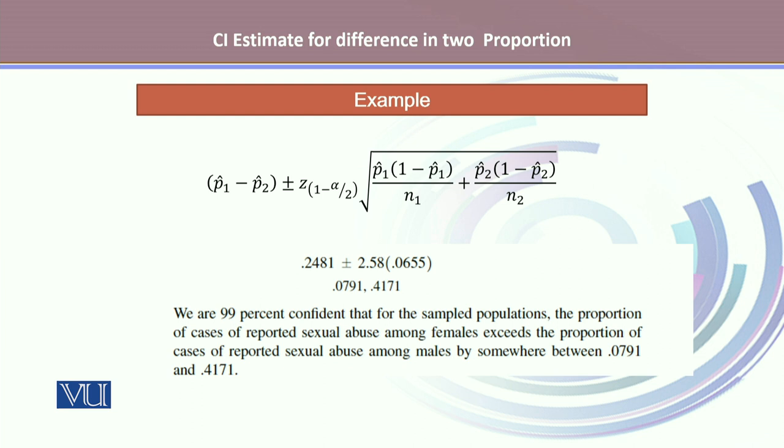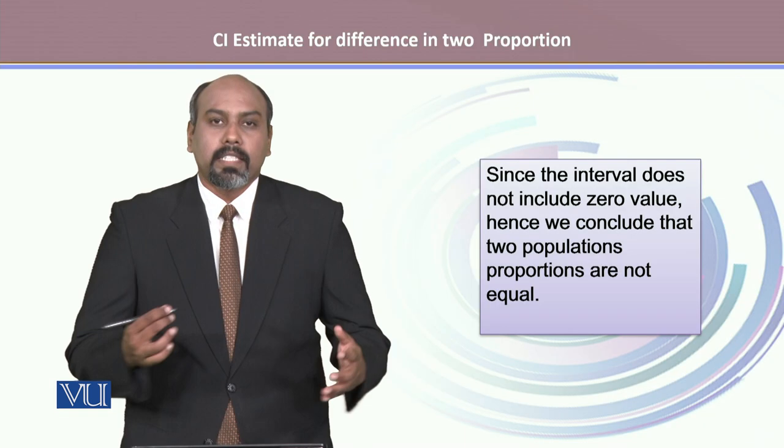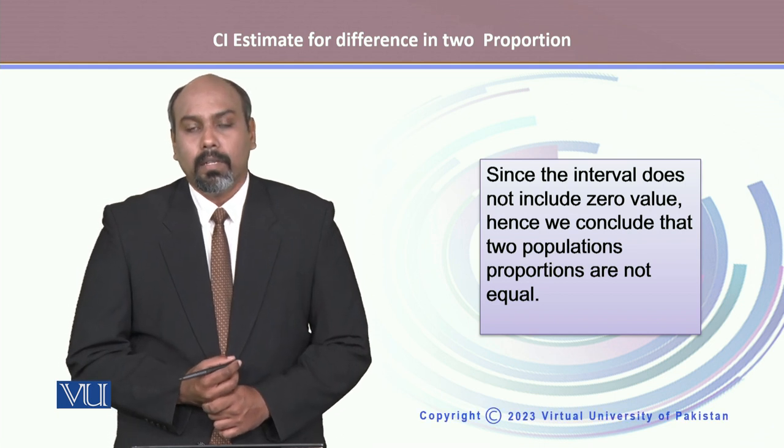Interpreting it as that we are 99% confident that for the sample population, the proportion of the cases of reported sexual abuse among females exceeds the proportion of cases of reported sexual abuse among males by somewhere between 0.0791 and 0.4171. Since the interval does not include 0 value, hence we can conclude that the proportions are different.